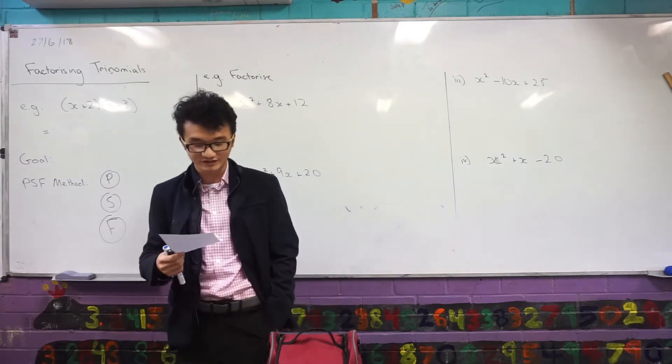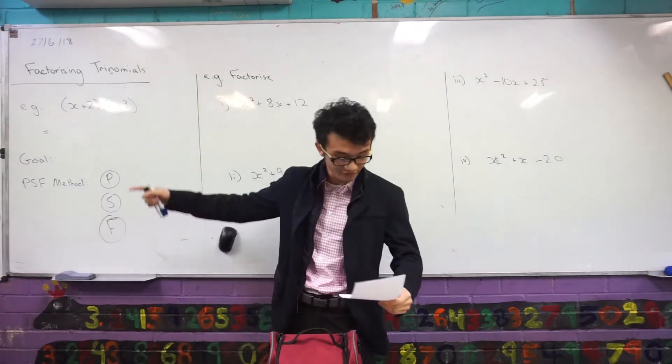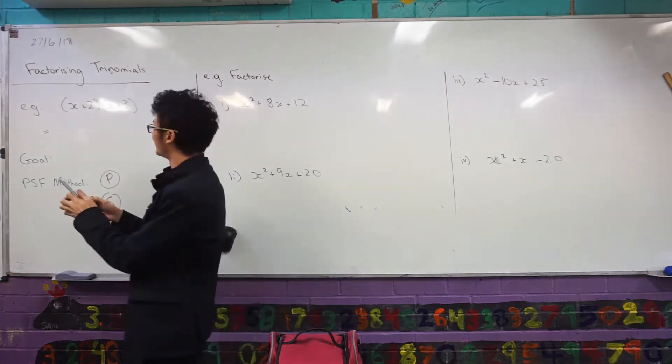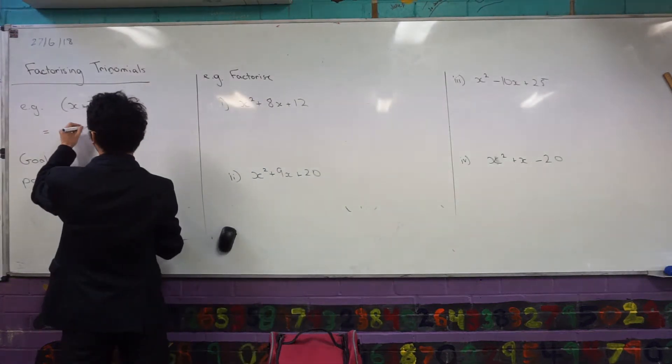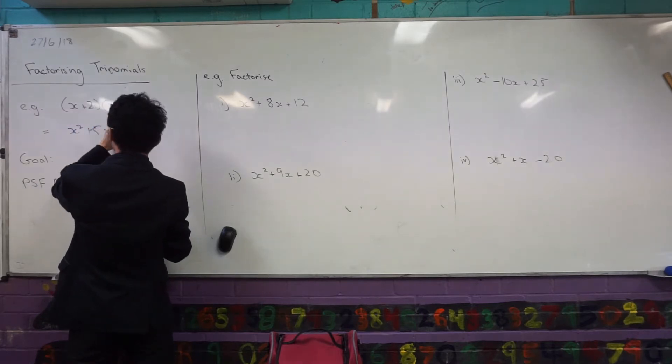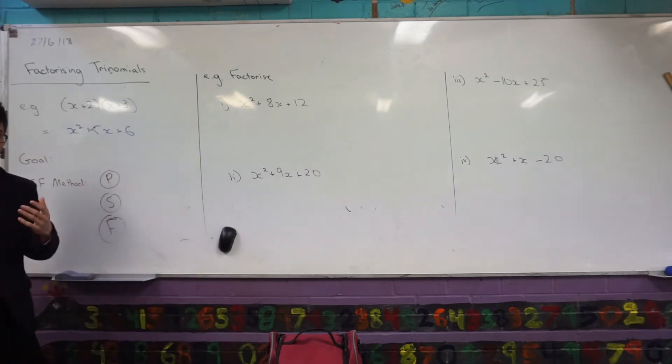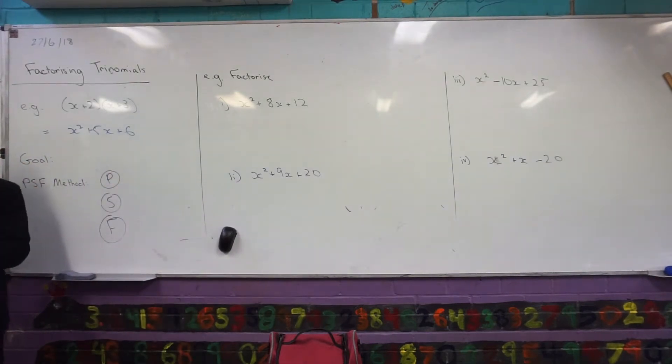The other way that we can think about factorizing trinomials is, if I look at this example here, the expansion, right? I know if I expand this out, I'm going to get x squared plus 5x plus 6.